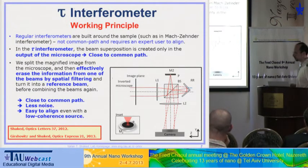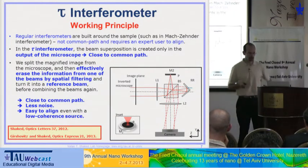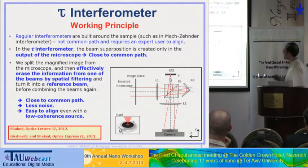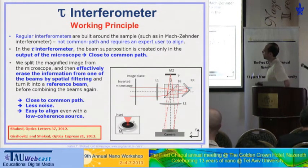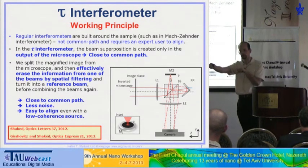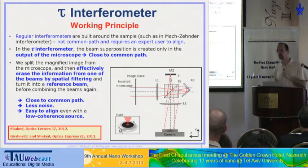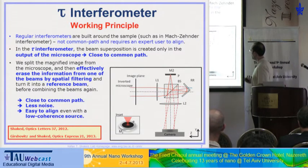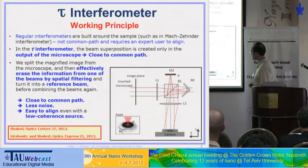We call it the tau interferometer — initially named after the university TAU, but then a reviewer said that's not publishable, so I changed it to the Greek letter tau because the two beams interfere at a certain angle like the tau letter. Here we have an inverted microscope or any imaging system. Unlike the conventional approach of splitting the beam at the laser output, here we split and combine the beam only at the output of the system, using a simple beam splitter splitting the beam into two, with mirrors, getting interference between two sample beams on the camera.